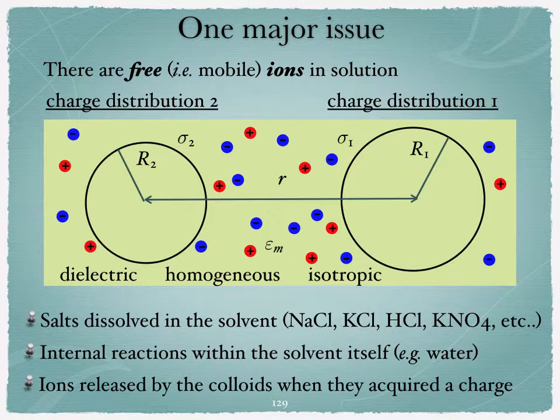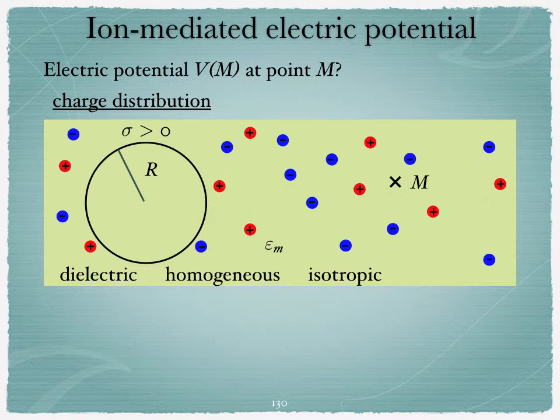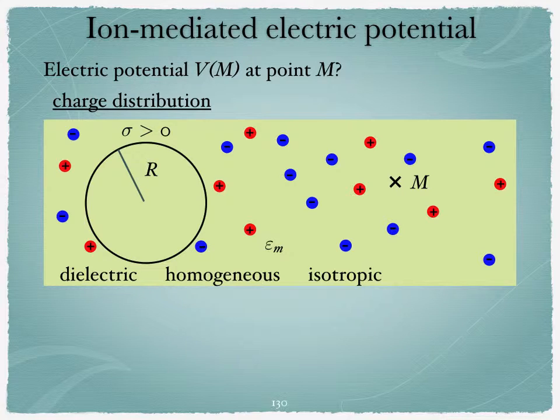Now the thing is, how do we compute the interaction between charge distribution 1 and 2, knowing that there are ions around them? We need to go to something a little bit simpler. Firstly, let's try to figure out what would be the potential created by all these guys - the actual charge distribution here on the left with sigma bigger than 0, so I've chosen positive for this example, with the same radius R. And then you've got these ions, and I want to figure out what would be the actual potential at point M.